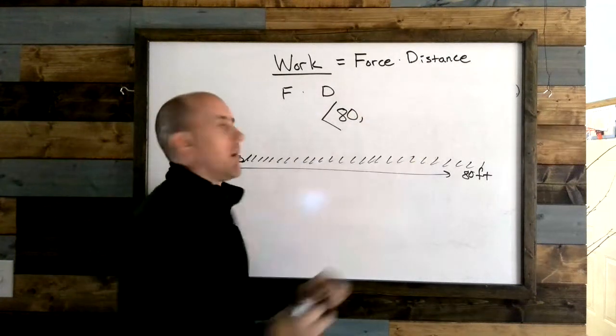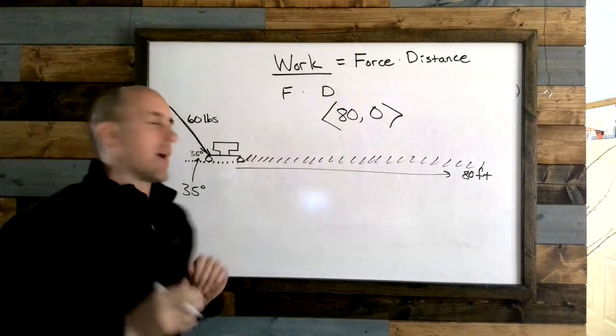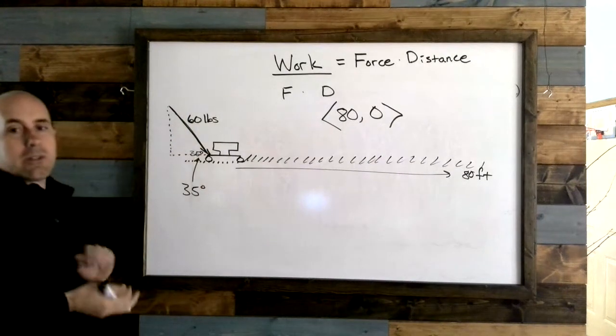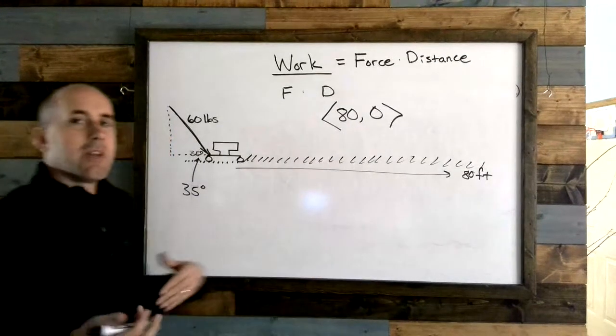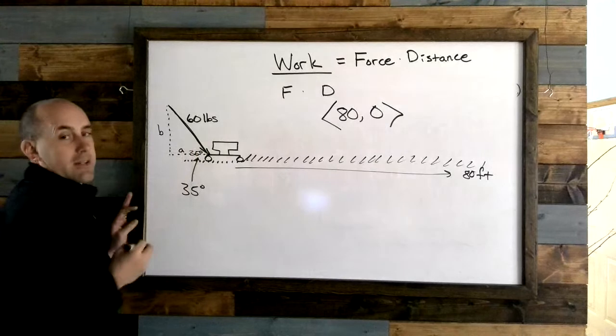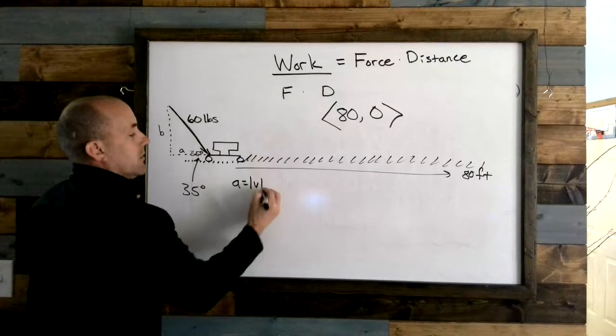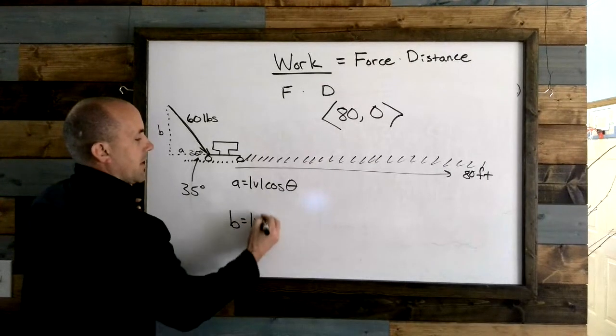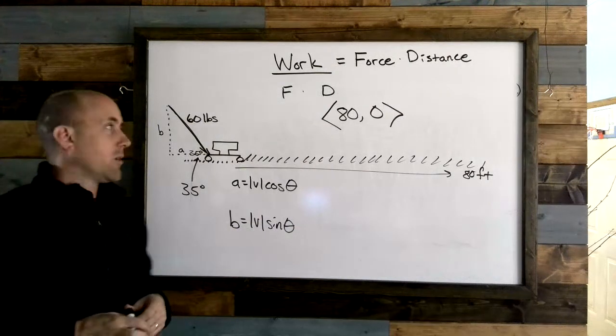For the force vector, again we need to consider a vertical component to the vector and we need to consider a horizontal component to the vector. If you remember from last week, we said that if you want to know the vertical component of a vector which is b, and the horizontal component vector which is a, we had formulas: a was equal to the magnitude of the vector times the cosine of theta, and b was equal to the magnitude of the vector times the sine of theta. Those were our components. Once we can find that, we can plug it right into here.